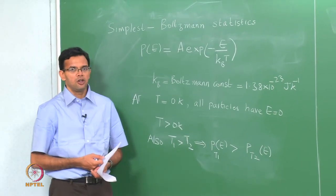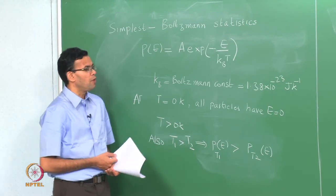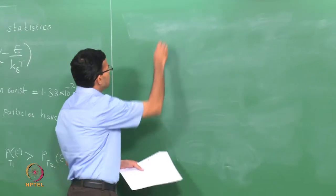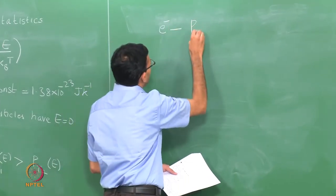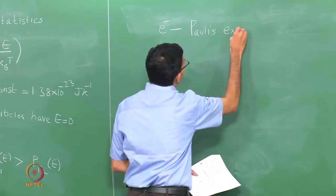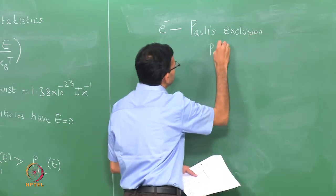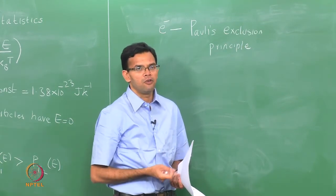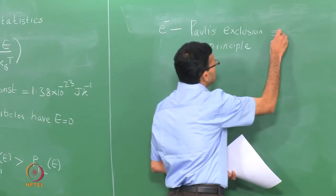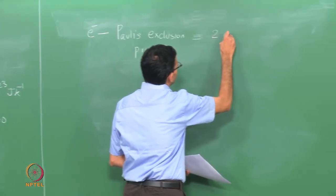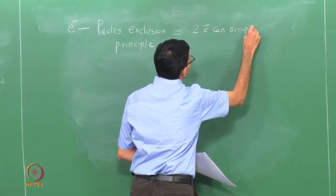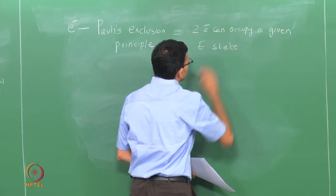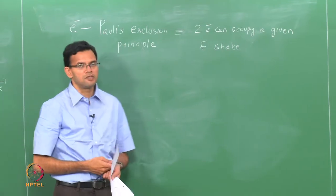The problem with using Boltzmann statistics for electrons is that electrons have to obey Pauli's exclusion principle, which states that no 2 electrons can have the same set of all 4 quantum numbers. This translates into the fact that only 2 electrons can occupy a given energy state. This is the concept we used when we derived the density of states earlier.